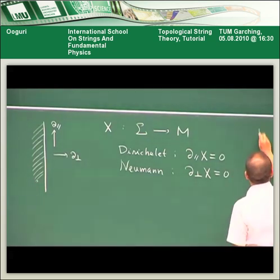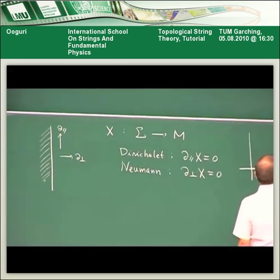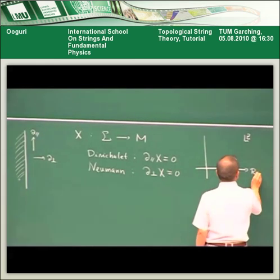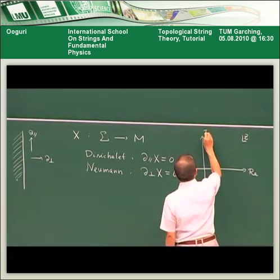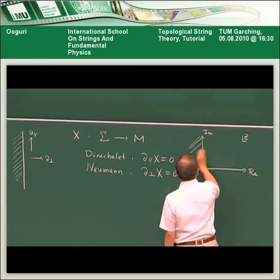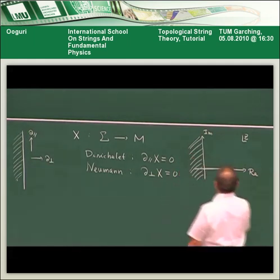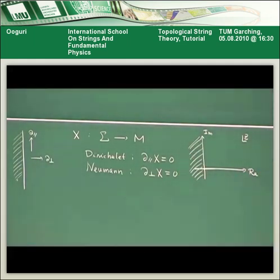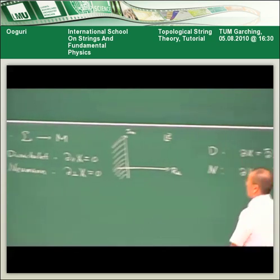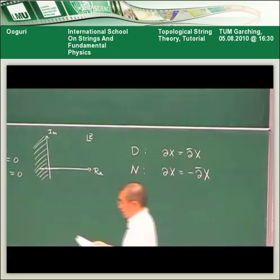If I use complex coordinate on the worldsheet Z, so this is the real axis and this is the imaginary axis, so that the boundary is along the imaginary axis, then the Dirichlet condition can be written as del X equals del bar of X, and Neumann condition is del X equals minus del bar X, as you can easily figure out.